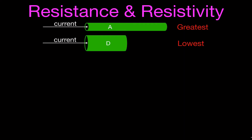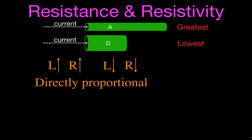Let's see if we can quantify this a little bit more. The resistance is really related to the length and the cross-sectional area. As the length of the wire increases, the resistance also increases. As the length of the wire decreases, the resistance also decreases. That means the length and the resistance are directly proportional to each other, and we can write that as R is directly proportional to L.